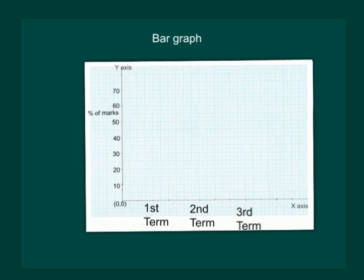Since student A got 40 percent marks in the first term, so we know that our bar has to be somewhere here. Let us draw the bar. On drawing the bar we get the figure like this.